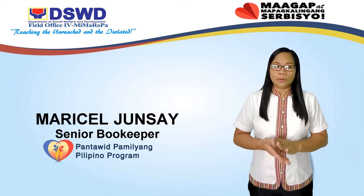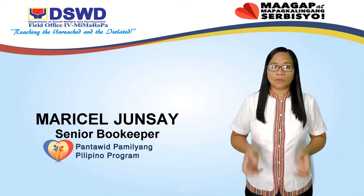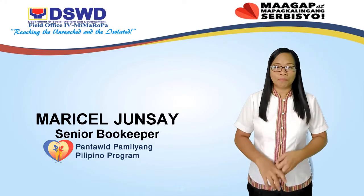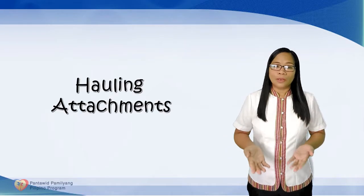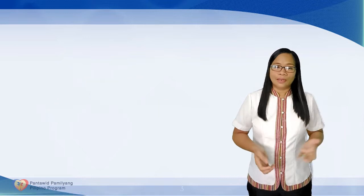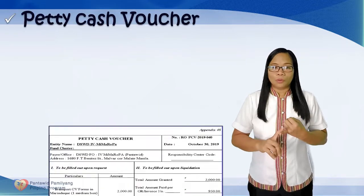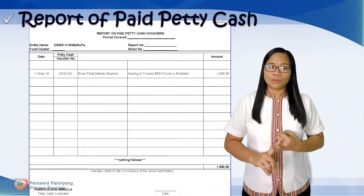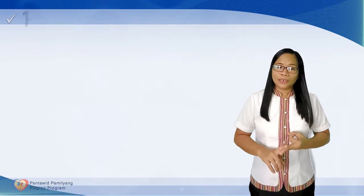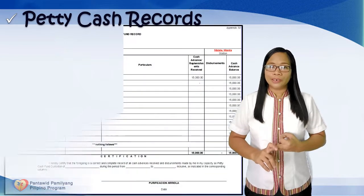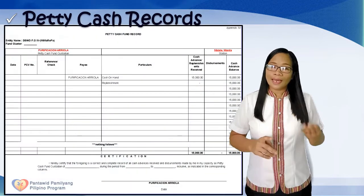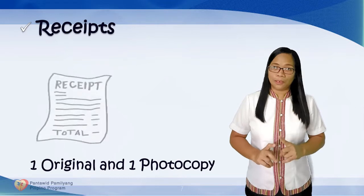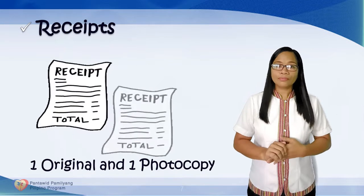Today, I am going to present the Attachments for Holding, Miscellaneous Expenses, and Utilities. For Holding Attachments, we have the Checklist. First, the Petty Cash Vouchers. Second, Report on Paid Petty Cash Vouchers. Third, the Petty Cash Record. And last, the Receipt — one original and one photo cutting.